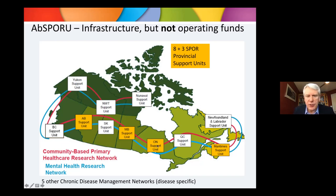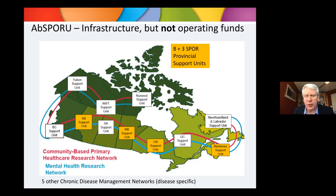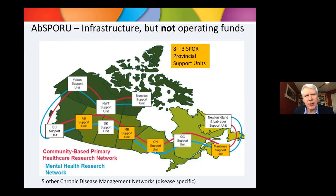In addition to each provincial SPORE support unit, for which CIHR and Alberta Innovates provide infrastructure support, CIHR also supports seven other national networks — one on community-based primary health care, one on mental health research, and five chronic disease management networks on specific diseases: diabetes, chronic kidney disease, inflammatory bowel disease, chronic pain and addictions, and child development with a focus on neurodevelopment.